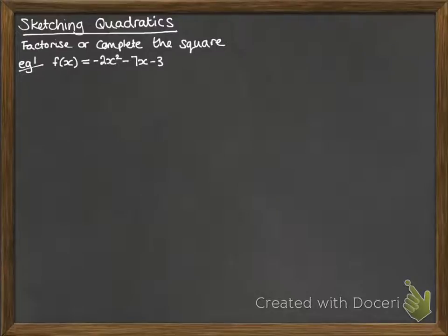We've got f(x) = -2x² - 7x - 3, so here we have a quadratic function. If we try to factorize it, remember we will do the -2 times the -3 to get our 6. Now we need two numbers that multiply to make the 6 and add to make that -7 in the middle. So we'll split that up into a -6 and a -1.